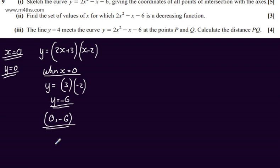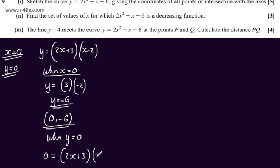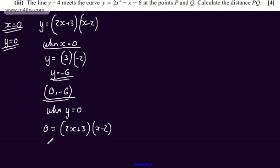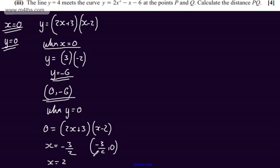So we can write down the coordinates of the point of intersection with the y-axis as (0, -6). Now considering when y is equal to 0, we have 0 equals 2x plus 3 multiplied by x minus 2. Solving for x, we get x equal to minus 3 over 2, or x equal to 2, giving us the points (-3/2, 0) and (2, 0).